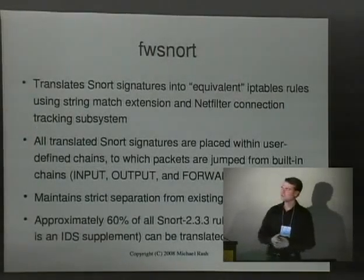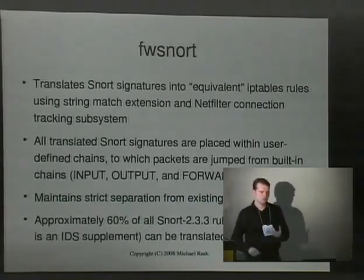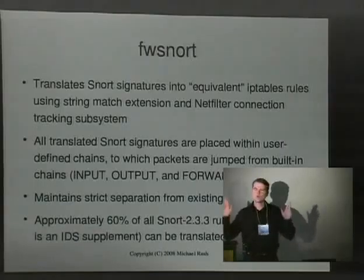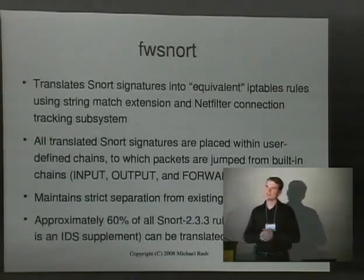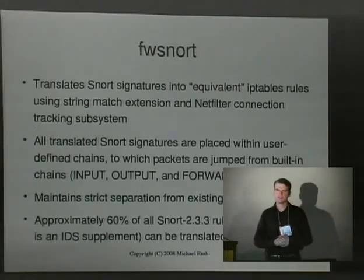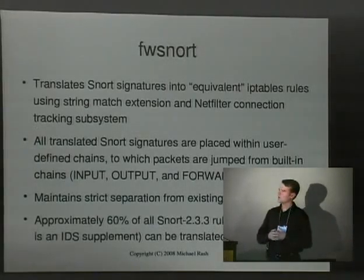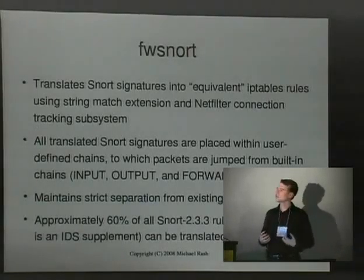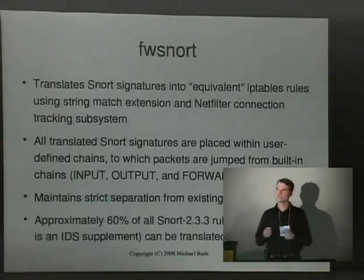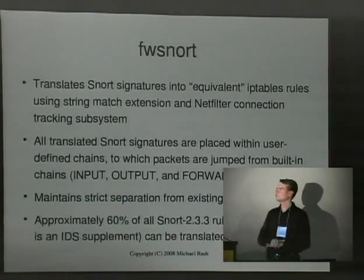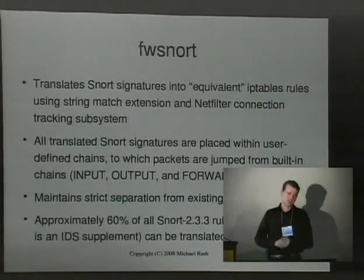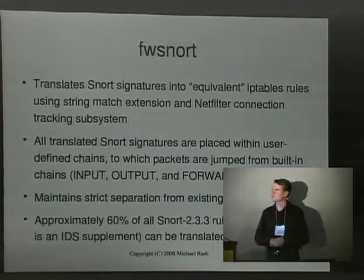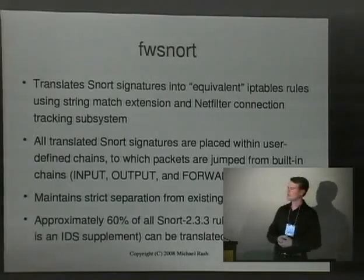FWSnort — what is this? It's a GPL project that translates Snort rules into equivalent IP tables rules. I have 'equivalent' in quotes because there are many differences. Essentially FWSnort tries to answer the question: what is the closest incarnation we can make of a Snort rule set, but put it directly within the Linux kernel itself? You'll see that you can get fairly far considering how flexible and powerful IP tables is.